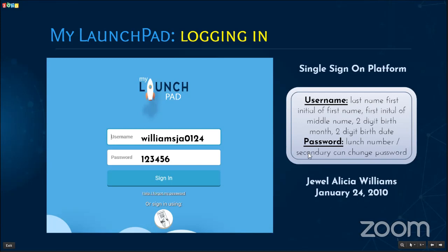Let's take a minute to discuss how you log into My Launchpad. First you type in your username. The username is your last name, first initial of your first name, first initial of your middle name, the two-digit birth month, and the two-digit birth date. For example, if your child's name was Jewel Alicia Williams, it would be Williams, J, A, then birth month January as 01, and birth date 24.